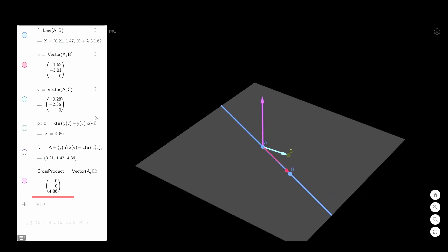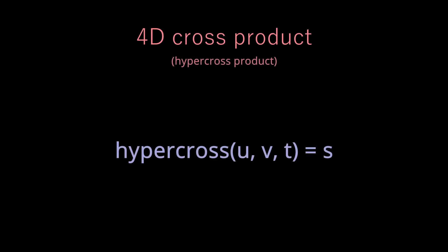Here is the whole scene in the 4D dimension. Now we can move on to 4D cross product. If there's more space in the 4D dimension, the hyper cross product takes three vectors, not two, and returns a vector S that's orthogonal to all three vectors.